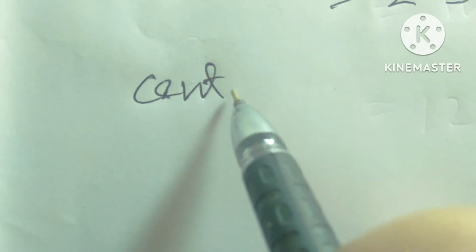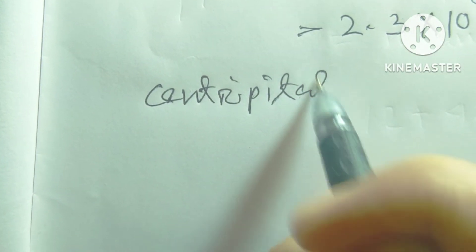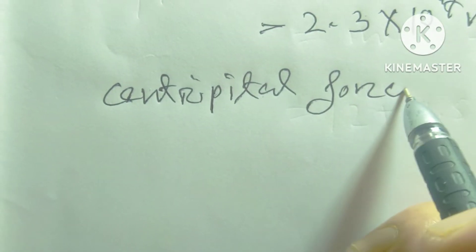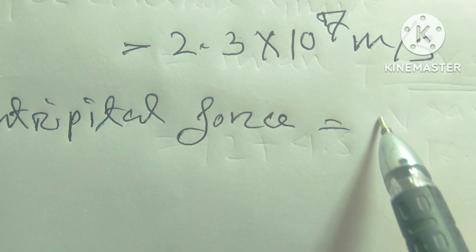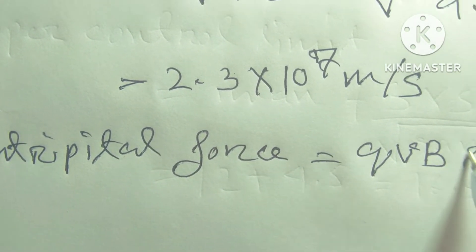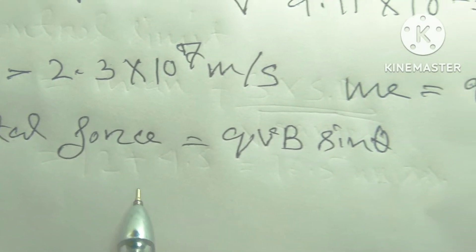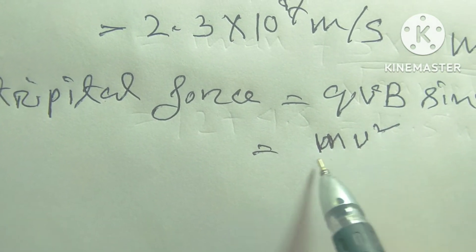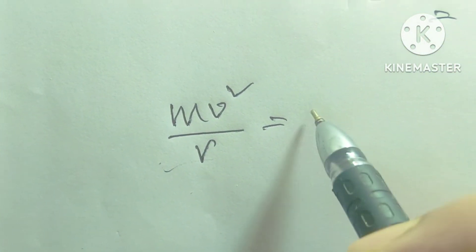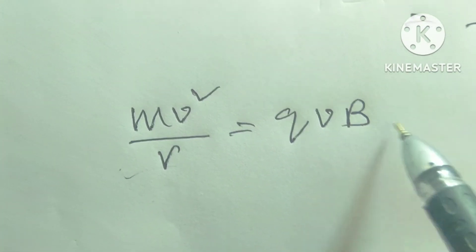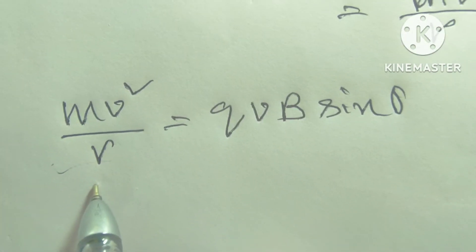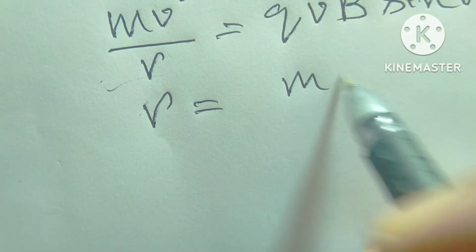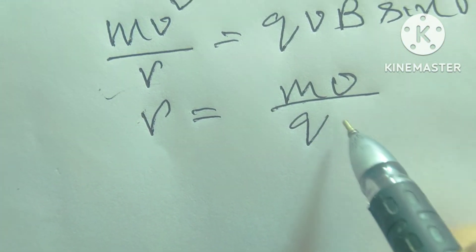Centripetal force equals QVB sin theta, and QVB sin theta equals mv squared by r. So mv squared by r equals QVB sin theta, and r equals mv divided by QB.